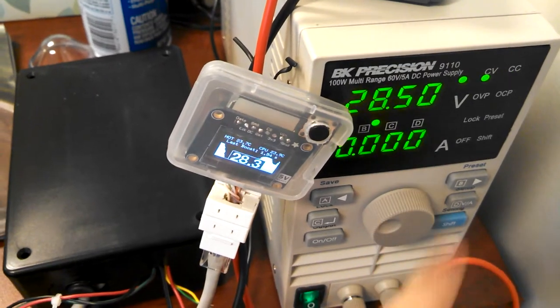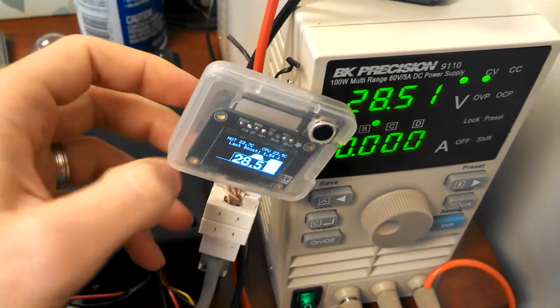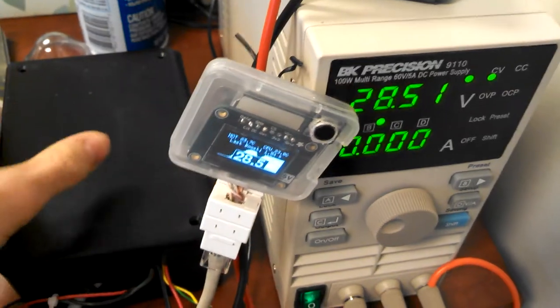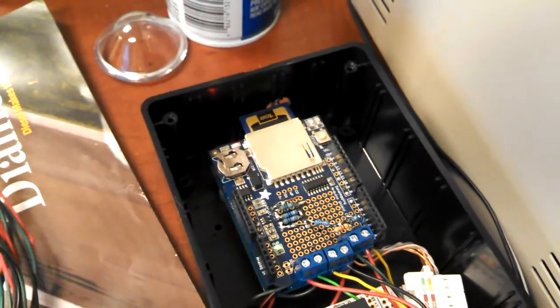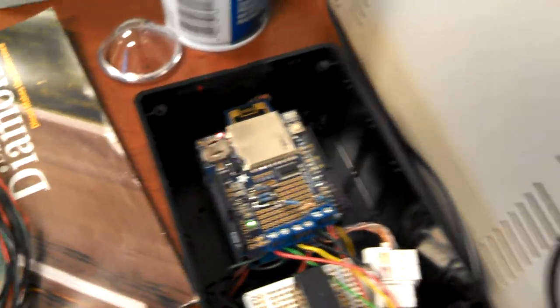And I didn't mention this before, but all this information, including the temperatures, are logged to an SD card, which you can see right here. I'm using a one gigabyte. It has tons of space.